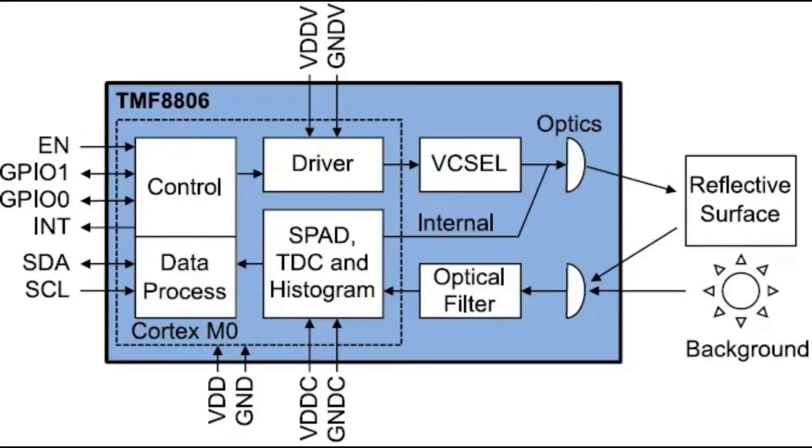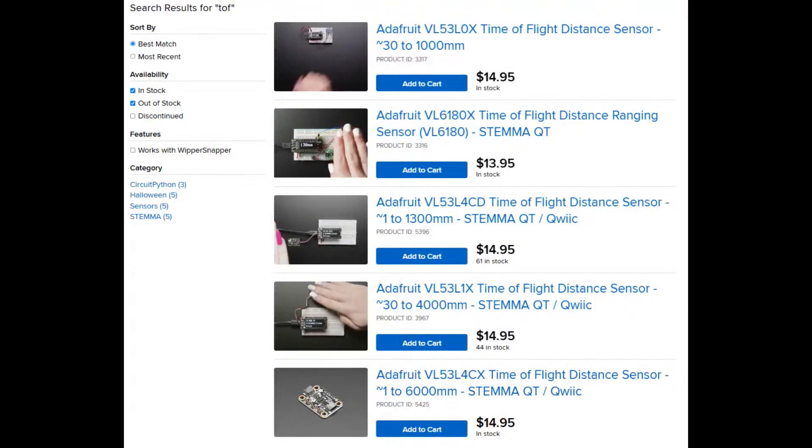So you look at the block diagram of the TMF 8806, you see that on the right, there's the optics and the laser and the filter and the reflective surface and stuff bouncing back. And there's like ambient light. And then there's the driver for this and the time manager, but the really computationally intense stuff is happening on a Cortex M0. And this is really common. In fact, pretty much every time of flight sensor that we've stopped, historically the ST series, but there's tons of other TMF sensors, all of them have a Cortex M0 inside.